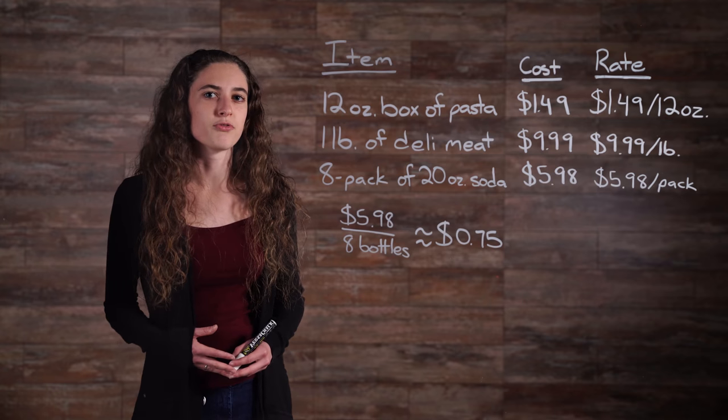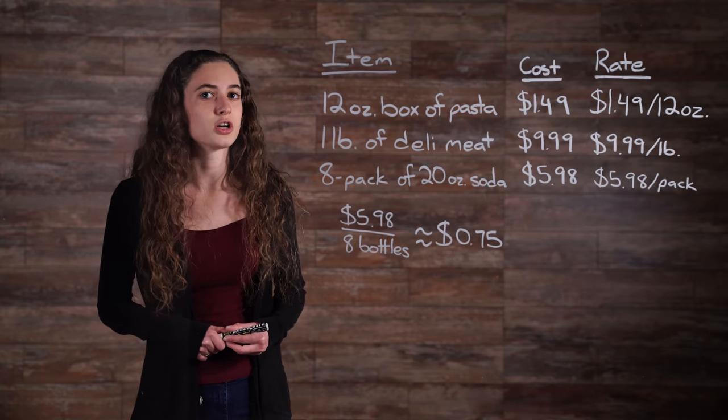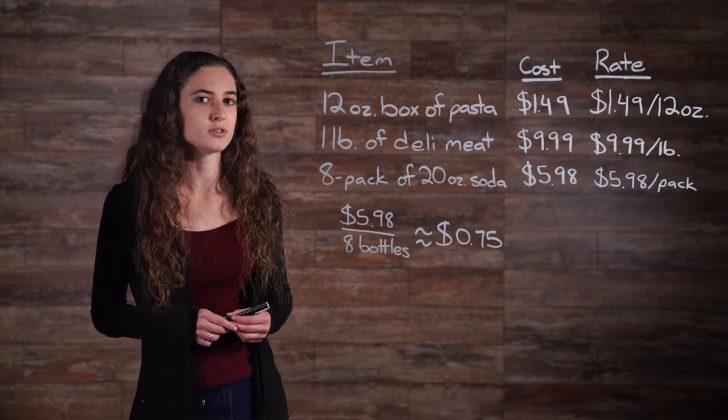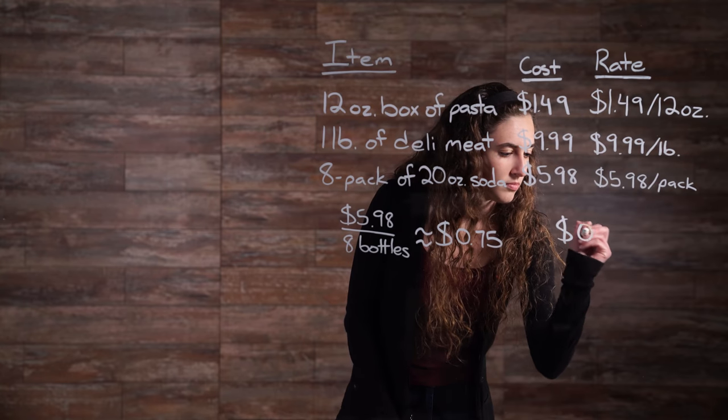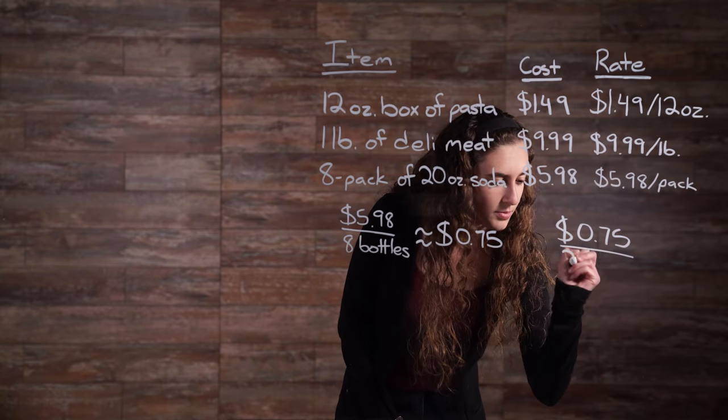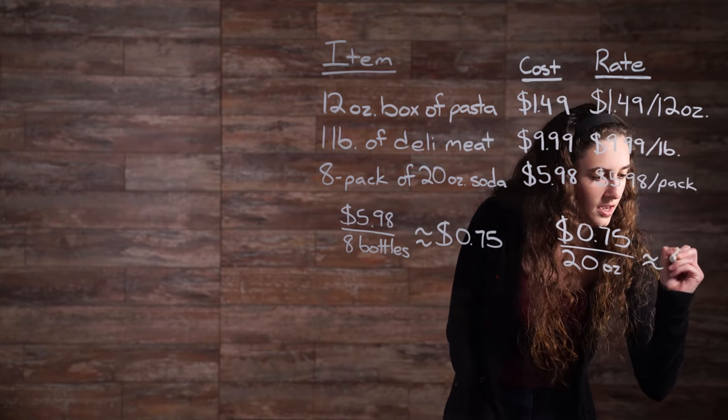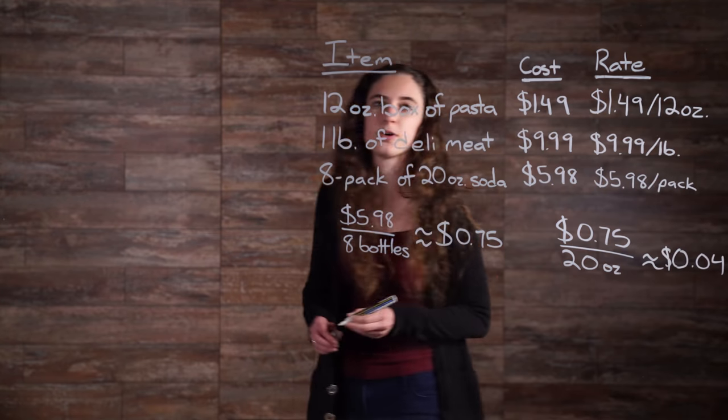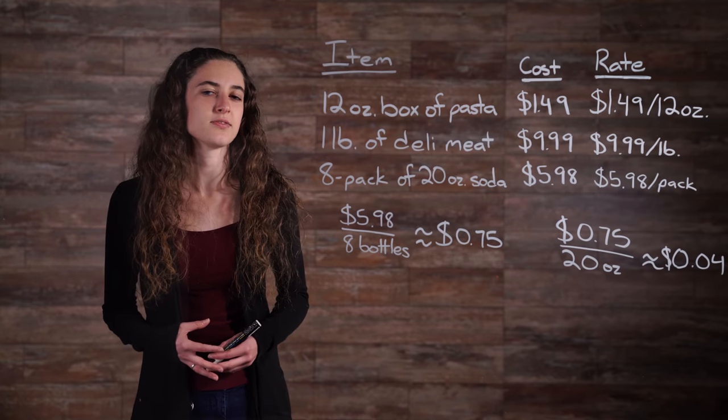Let's break down the soda cost per bottle further to determine the cost per ounce. If one 20-ounce bottle costs roughly $0.75, then dividing that cost by 20 ounces reveals the cost per ounce. So 75 cents per ounce divided by 20 ounces gives you roughly 4 cents per ounce. As you can see, breaking down costs to the smallest unit reveals the cost savings of the sale.